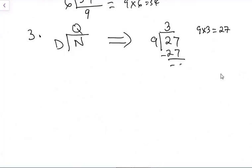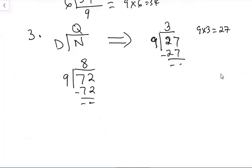The second example: 72 divided by 9. How many times should 9 go in 72? That would be 8 times — 8 times 9 is 72. If we subtract, we get nothing left. So 9 is the denominator, 72 is the numerator, and 8 is the quotient — our final answer.